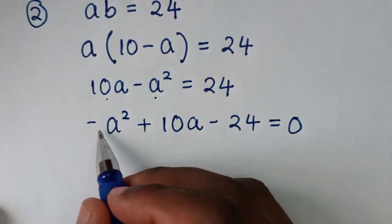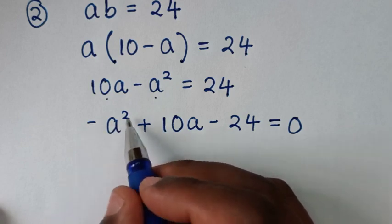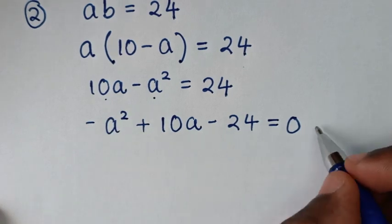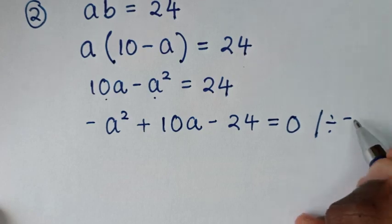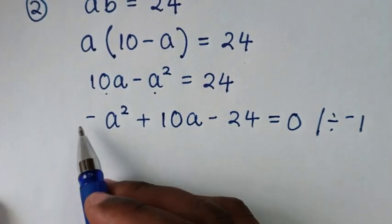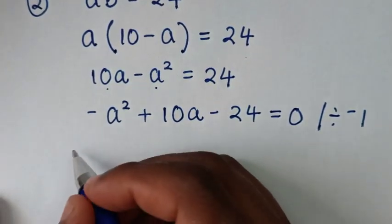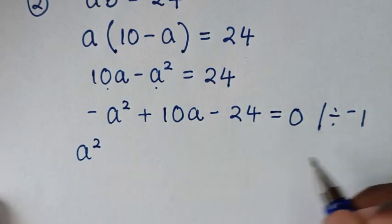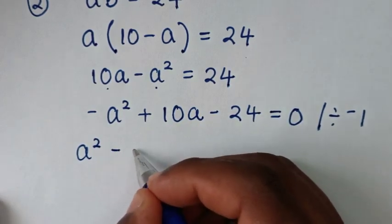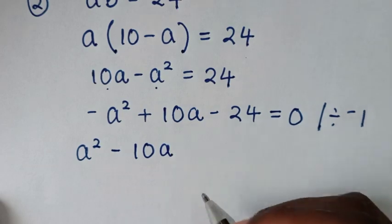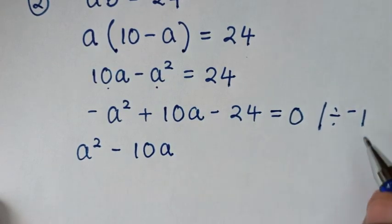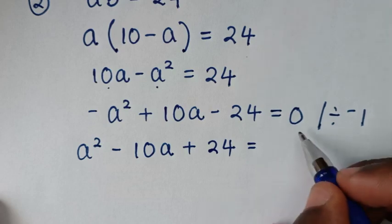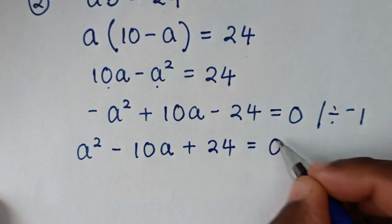From here, we'll make the a squared term positive. So we'll divide the whole equation by negative 1. So negative a squared divided by negative 1 is positive a squared. Positive 10a divided by negative 1 is minus 10a. Minus 24 divided by negative 1 is positive 24, is equal to 0.